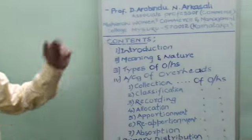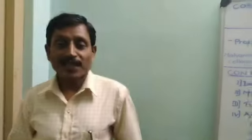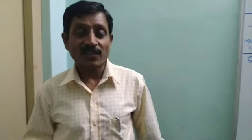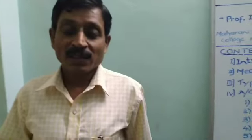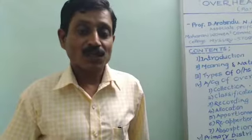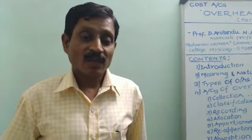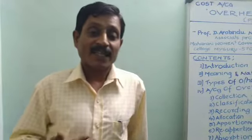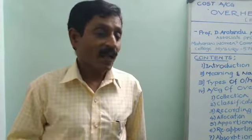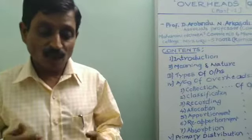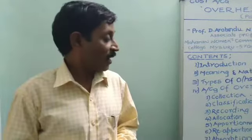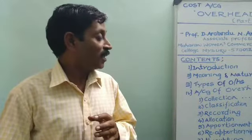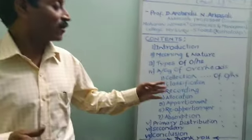The first step is collection of overheads. We have to collect overheads from different sources — from stores records, from financial accounts, from cash book, from wage abstracts, and from other sources. After collection, these overheads are to be suitably grouped under common features, which is known as classification of overheads. Simultaneously, we have to record these classified overheads, which is recording of overheads.